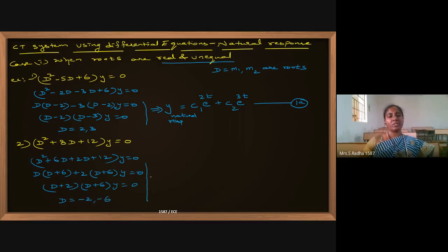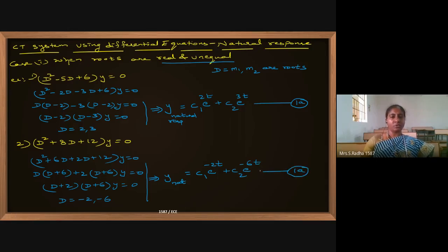The natural response or free response is c1·e^(−2t) + c2·e^(−6t) — this is equation 1a. Substitute the initial conditions given in the question to find c1 and c2, then put those values in to get the final natural response.